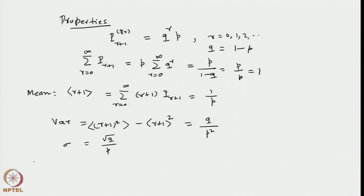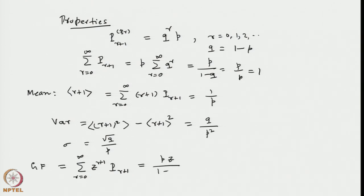If q is fairly close to 1, that is p is close to 0, then the mean and the standard deviation are of the same order. So when success probabilities are small, the uncertainty bound in the mean value is of the same order as the mean value itself. One more property is the generating function, defined as the sum of z^(r+1) times p_{r+1} for r from 0 to infinity, which comes to p*z divided by (1 minus q*z). Bernoulli distribution is one of the gateways to understand extreme value distributions.